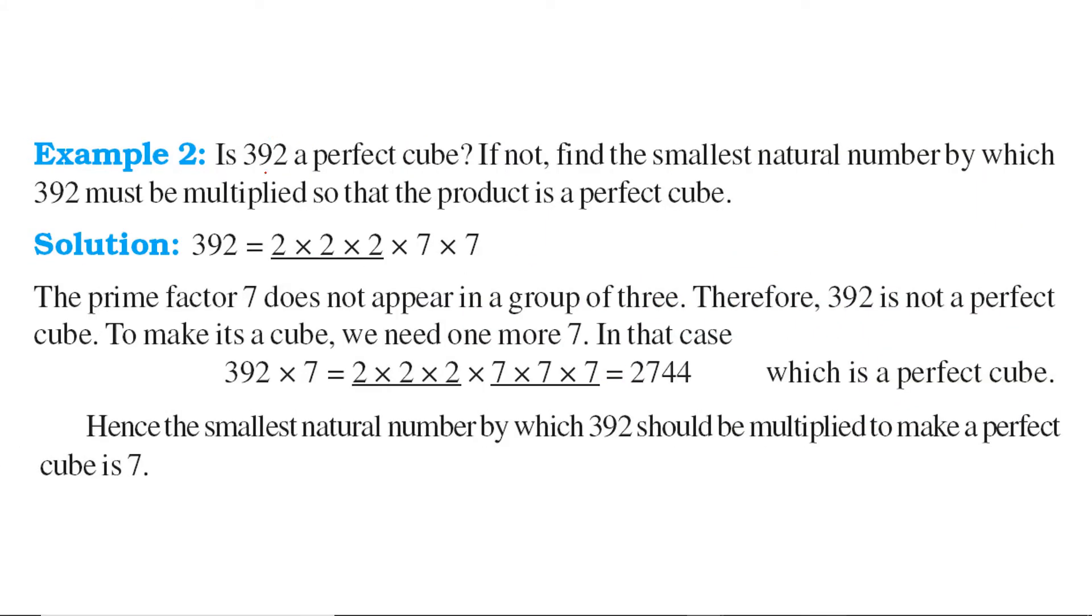Is 392 a perfect cube? If we just factorize it, we get 2 into 2 into 2, 7 into 7, but we are lacking one more 7 to make it a perfect cube. Right now it is not a perfect cube. Now the second part of the question is, find the smallest natural number by which 392 must be multiplied so that the product is a perfect cube. So we saw that we have to multiply it by 7.